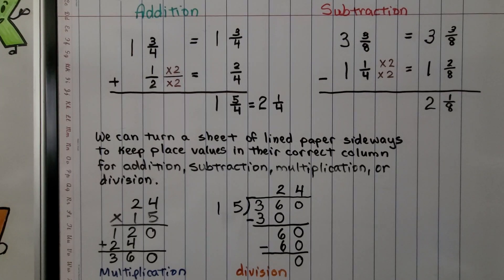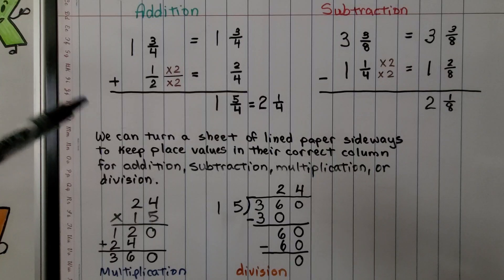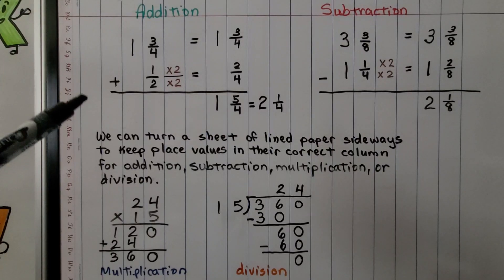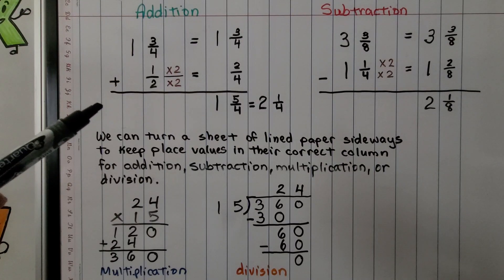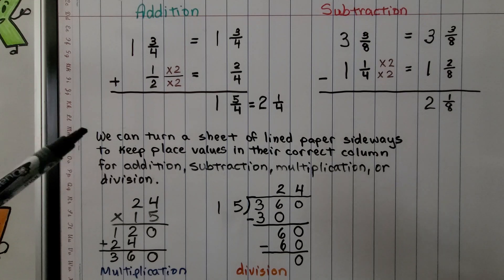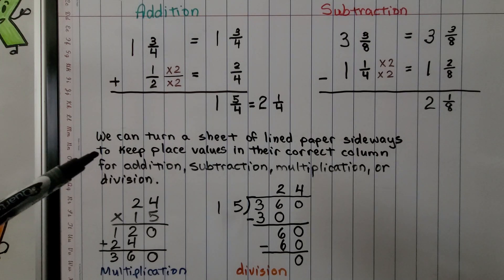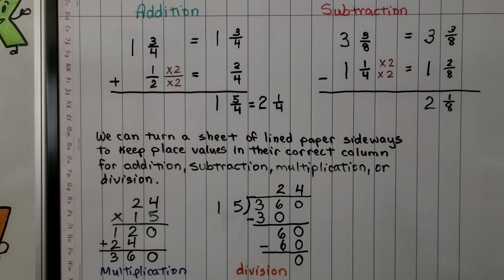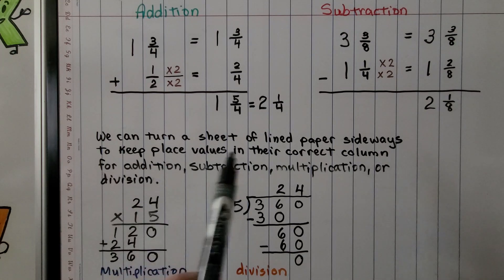Before the next example, a reminder: you can turn a sheet of lined paper sideways to keep place values in their correct column for addition, subtraction, multiplication, or division. This helps avoid errors from misaligned place values.